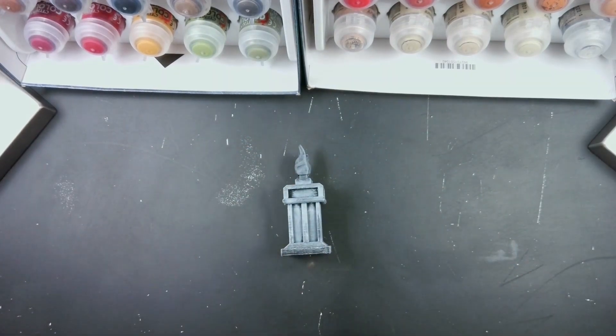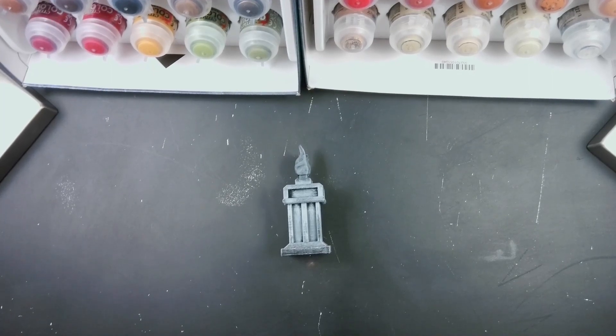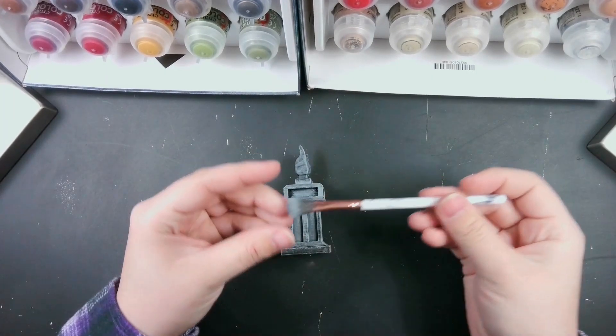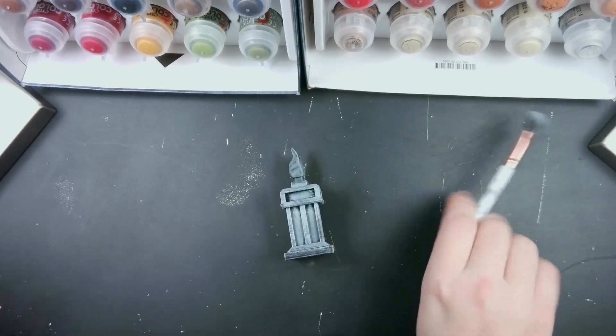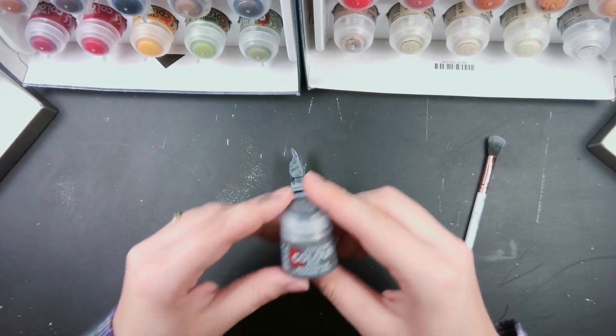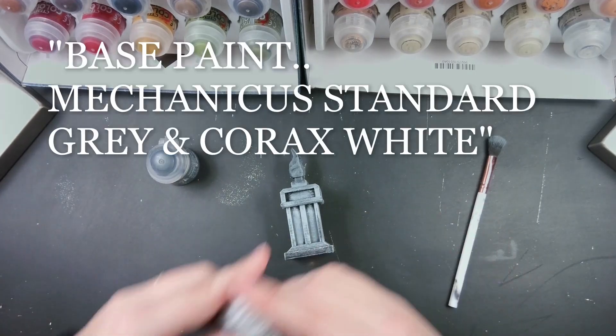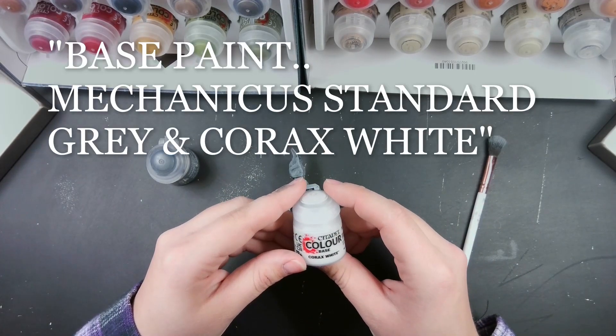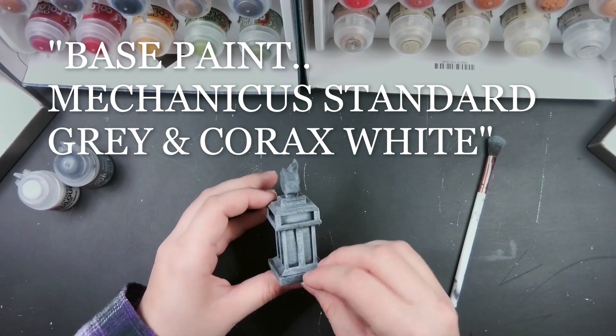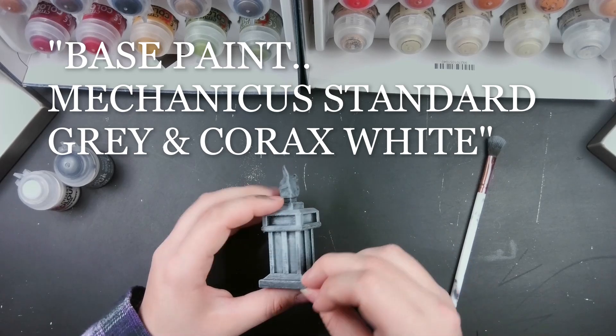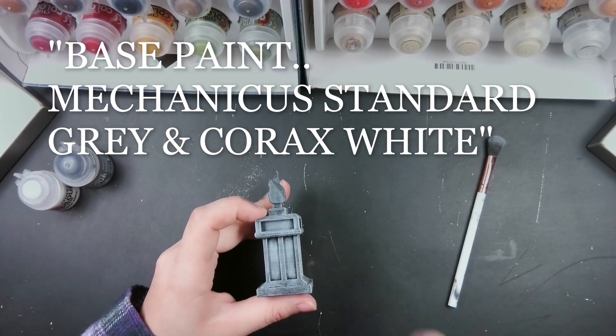So what I did was I dry brushed this with an old makeup brush that I have right here. It's an old makeup brush, you can see it's still kind of dirty. I just lightly brushed it all over and we used some Base Mechanicum Standard Gray and some Base Corax White, which I just kind of put all over to get the highlights where I want it. And you can see like the recesses are really dark, I like that.